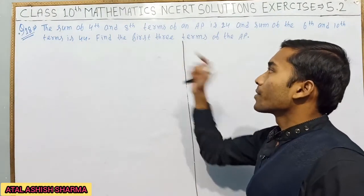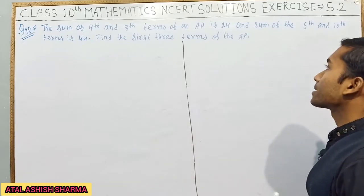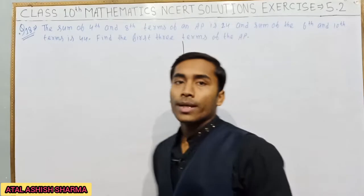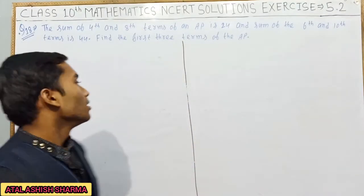4th term and 8th term sum is 24 and 6th and 10th term sum is 44. So you can find the first three terms. Okay, let's solve the problem.